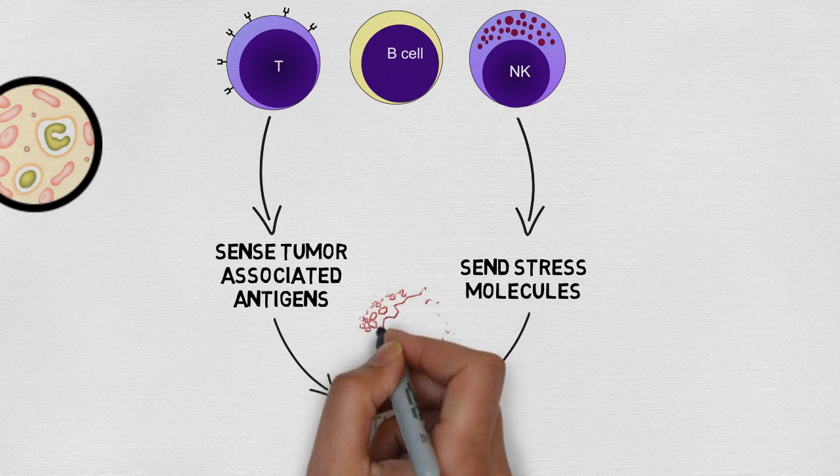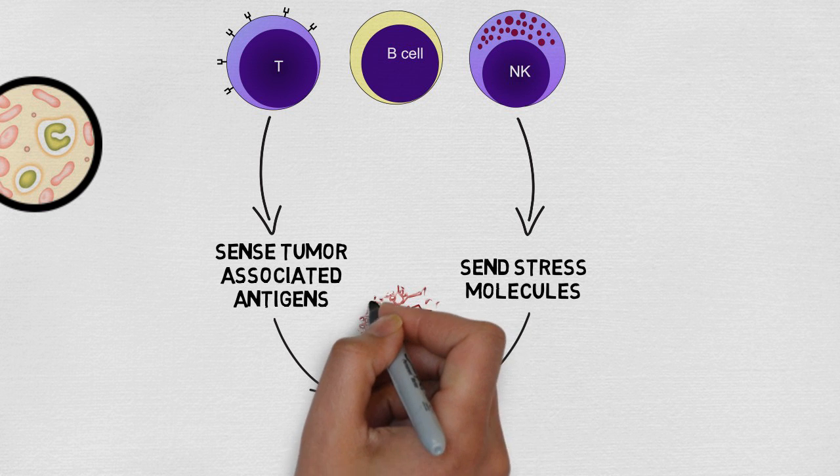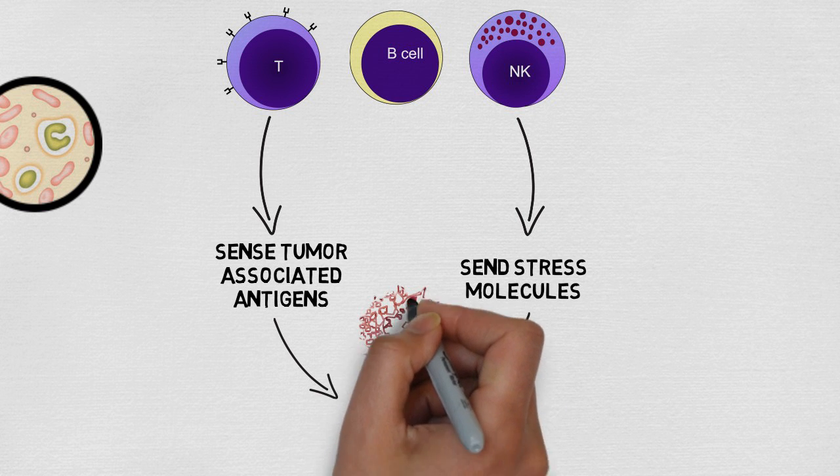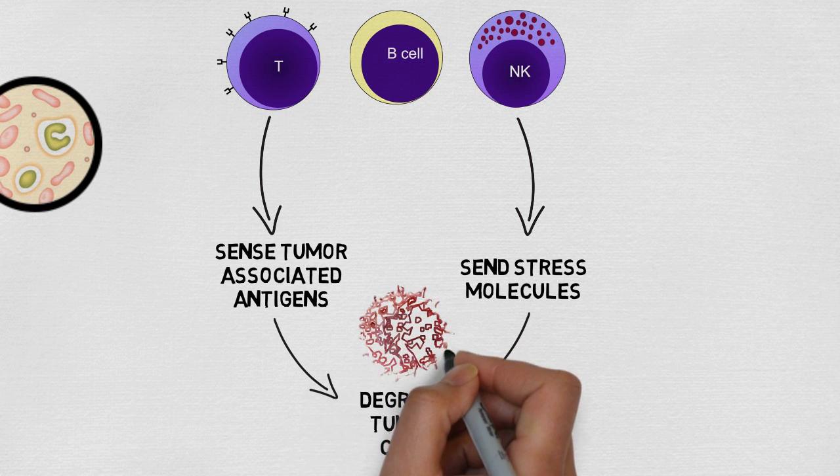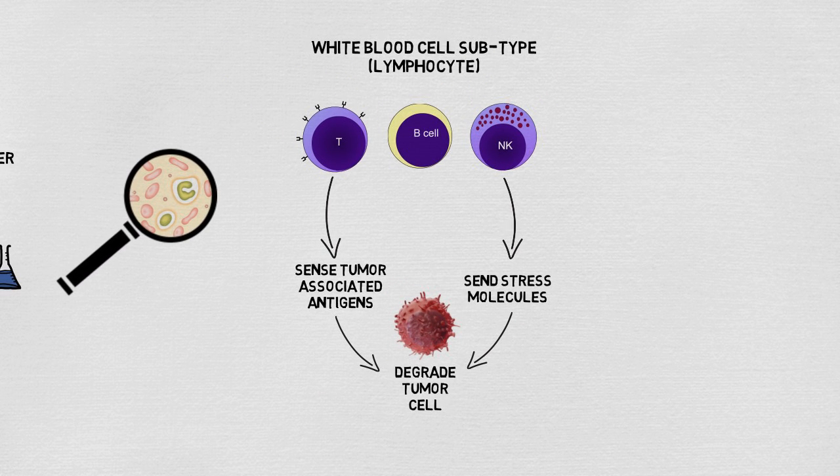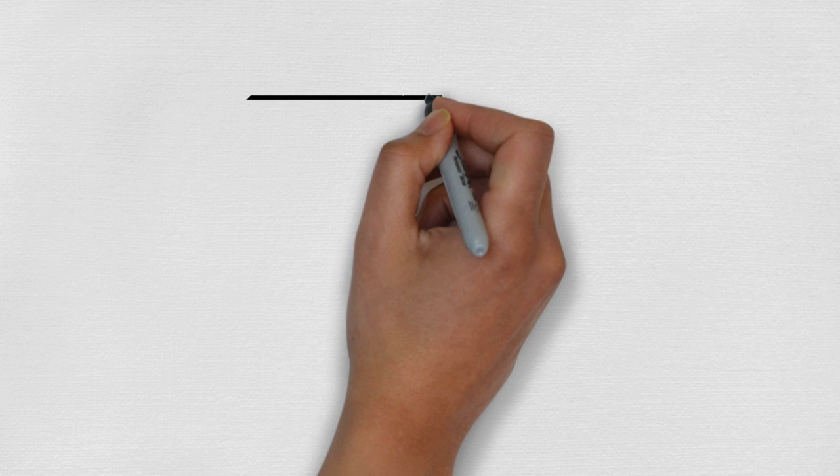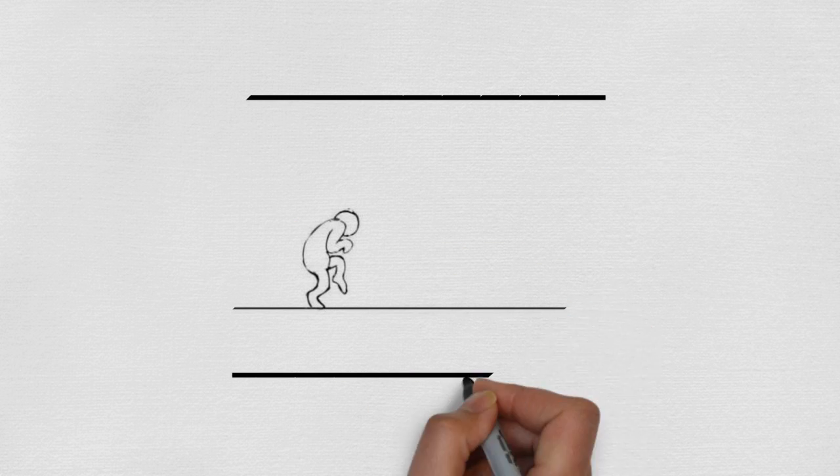As the tumor evolves, genetic changes occur that give some tumor cells survival advantage. For instance, tumor cells may no longer express the molecules that are sensed by the killer immune cells. As the immune system continues to kill the cells that it can recognize, the cells it can't recognize become more prevalent. This leads to the emergence of a tumor that can't be detected by the immune system.